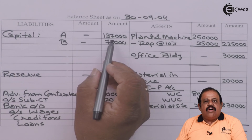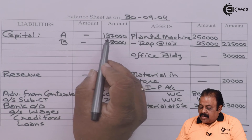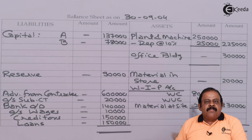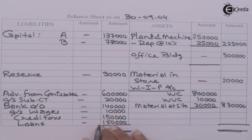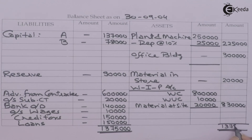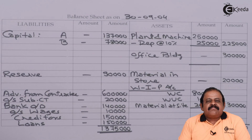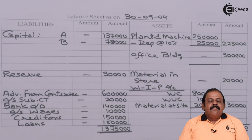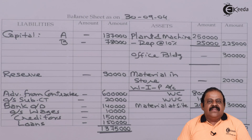Closing balances of partners' capital accounts are transferred to the liability side. The liability side total is 13,75,000, and the asset side also totals 13,75,000 — the balance sheet tallies. In this question we have learned how to solve a problem when contractors are partners, how to divide the profit, and how to present the partners' capital account in the balance sheet. Thanks for watching this video — stay in tune with Ikeda and subscribe to our channel.